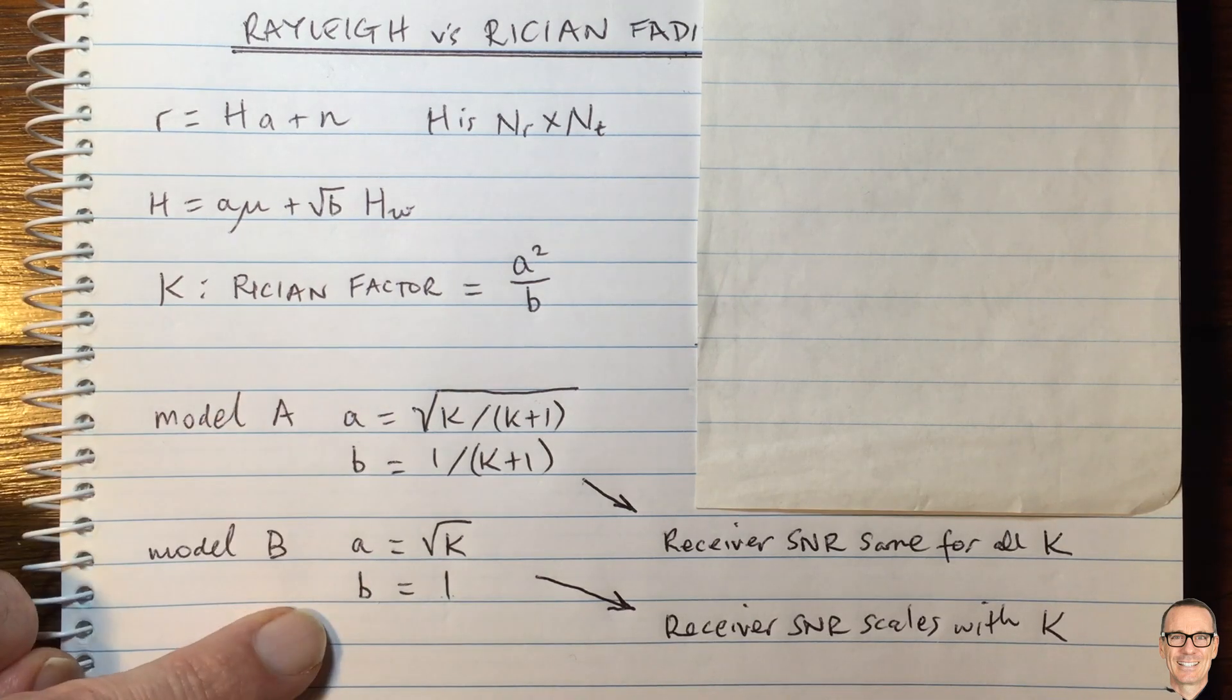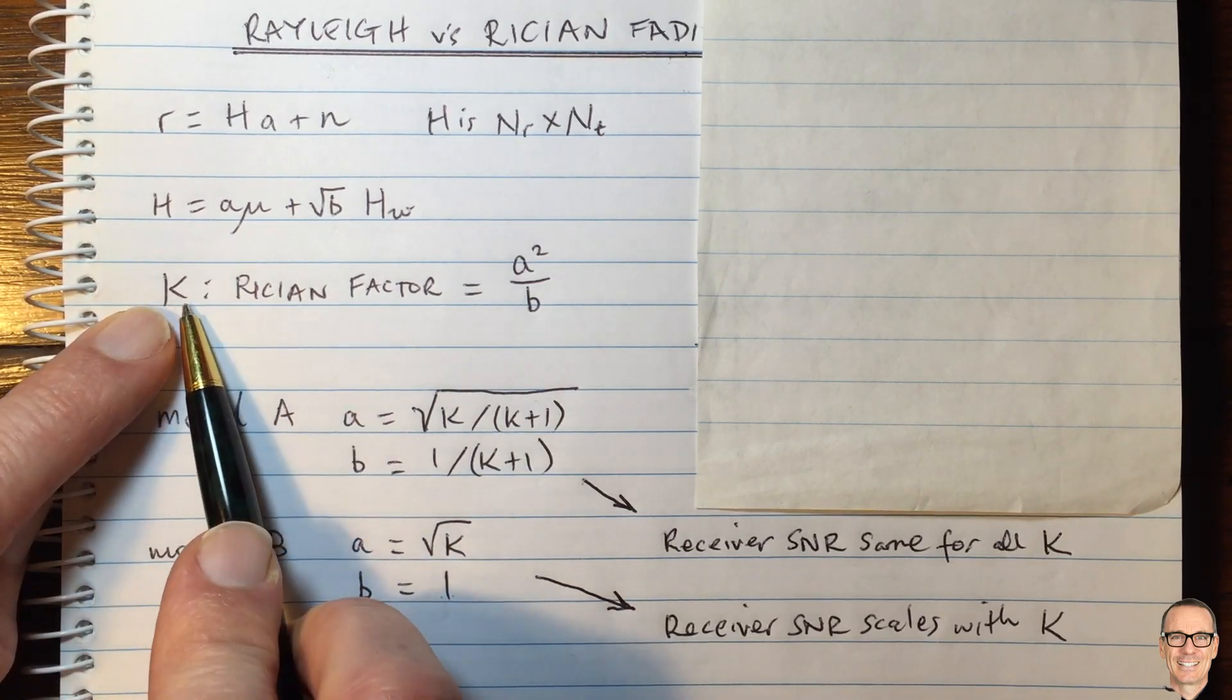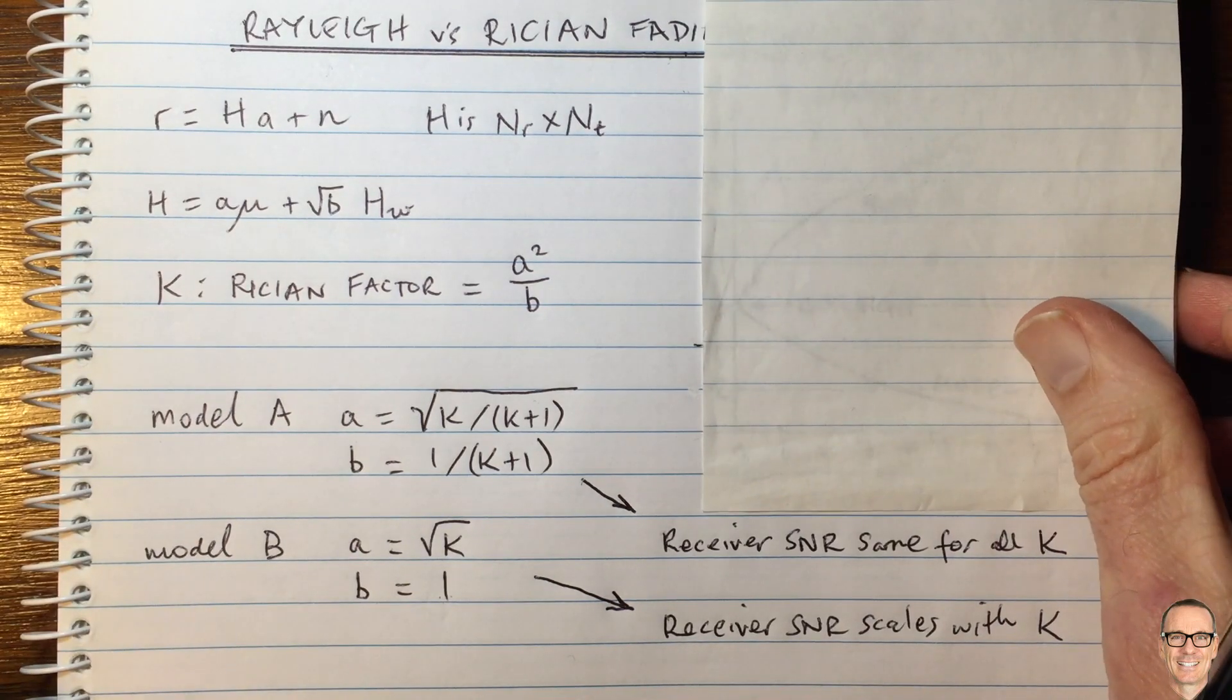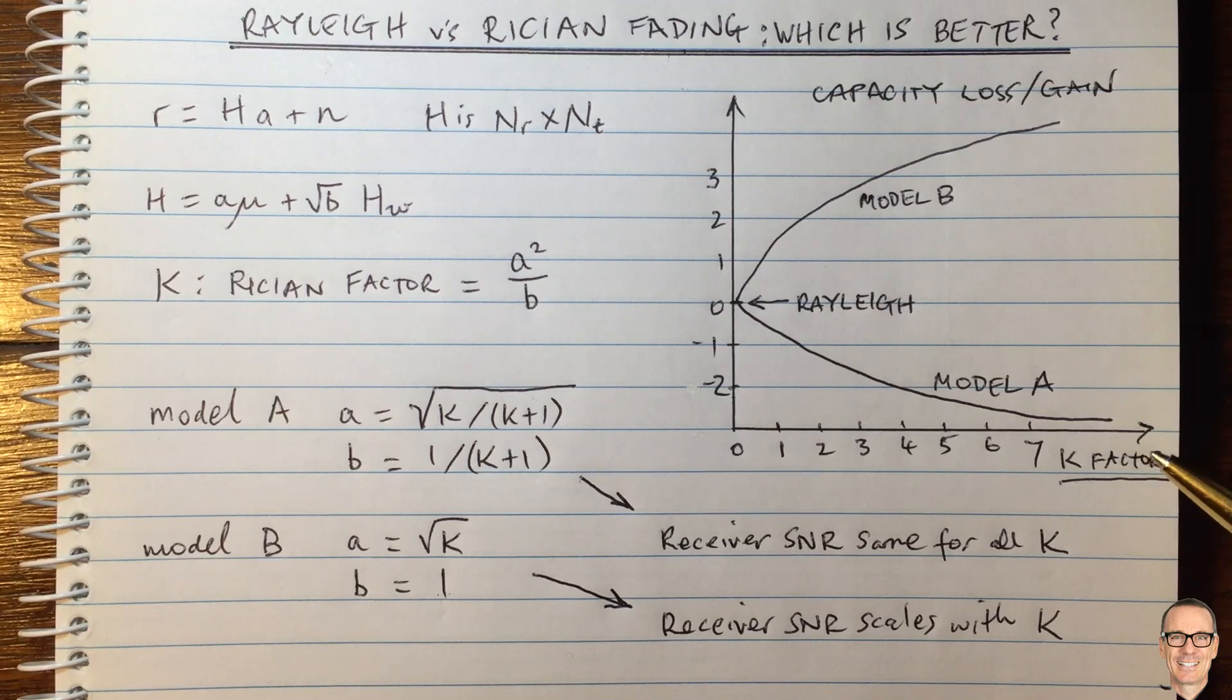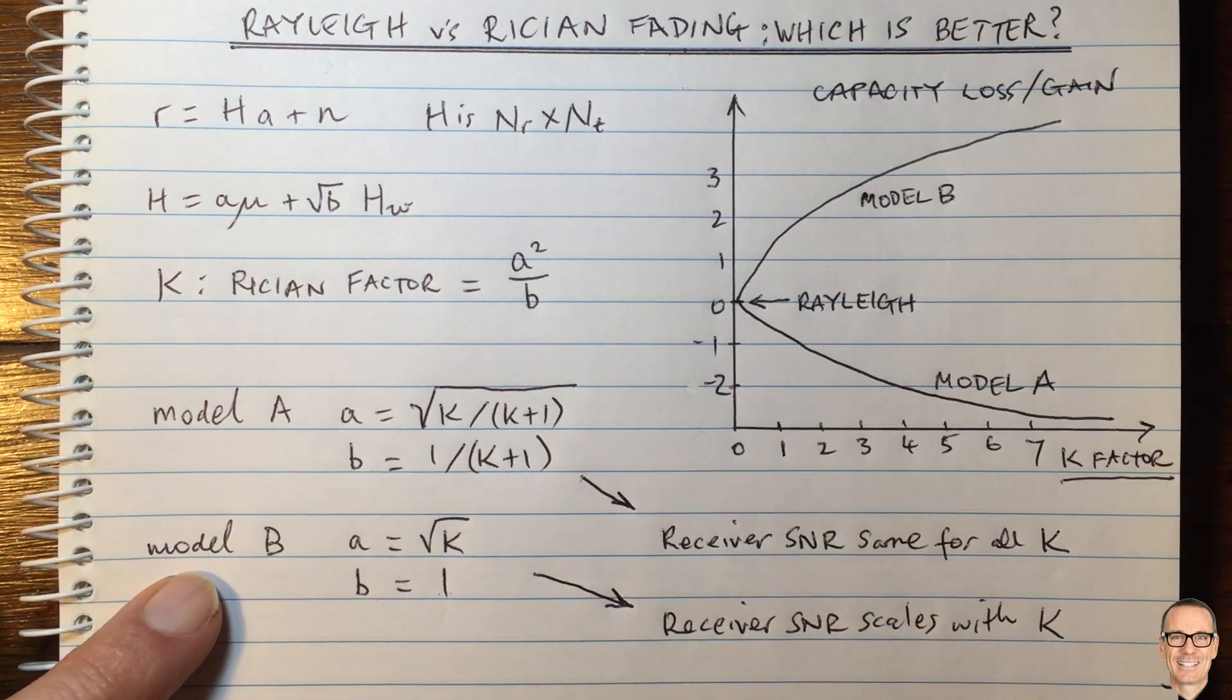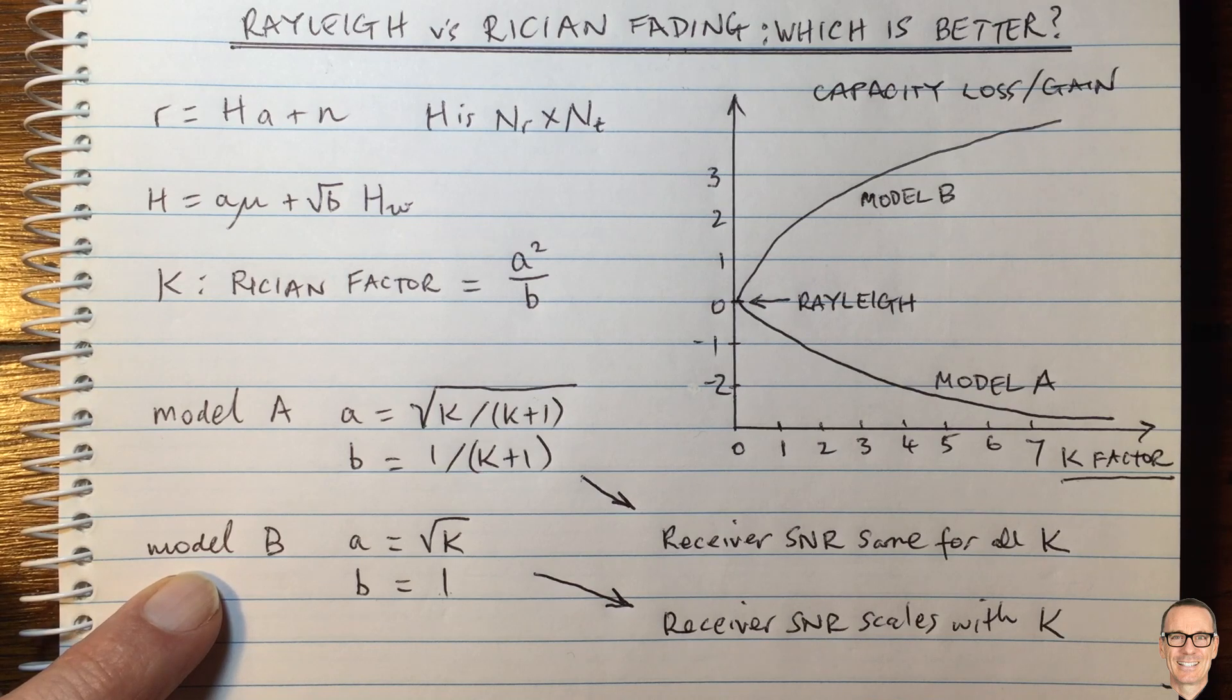Like I say again though, both models give you the same K factor. So now let's look at a comparison of the two. And this is where you see this difference in the way that it's often presented. Sometimes in papers, they use model A. Sometimes they're using model B. And you get exactly the opposite results if you use one from the other.